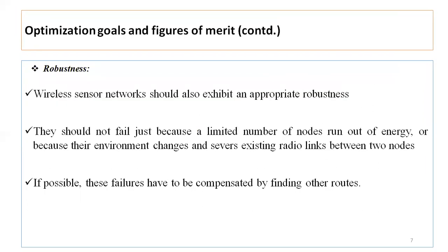The third parameter is robustness. A wireless sensor network should exhibit high robustness — it should not fail. Nodes should not fail by running out of energy due to battery failure, and the network must be maintained and always operational. If possible, these failures have to be compensated by finding alternative routes whenever a failure occurs.